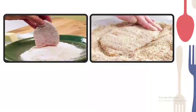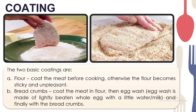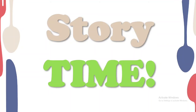The last preparation method is coating. We have two basic coatings: first, coat the meat with flour before cooking — otherwise the flour becomes sticky and unpleasant; second, coat the meat in flour, then egg wash (made of lightly beaten whole egg with a little water or milk), and finally with breadcrumbs.